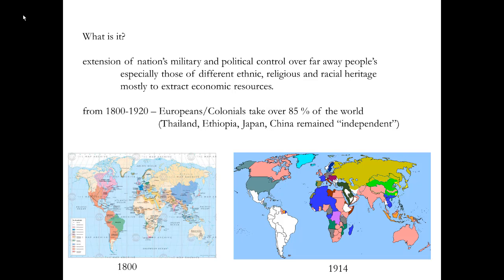From 1800 to 1920, Europeans and colonials — their descendants in the United States, Canada, and Australia — will take over 85% of the world. Very few modern countries were left independent: Thailand, Ethiopia, Japan, China remained quote independent. But even that independence was heavily influenced by European control, especially economic control.